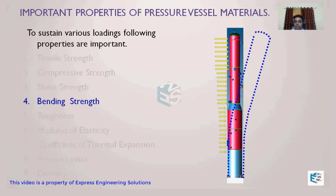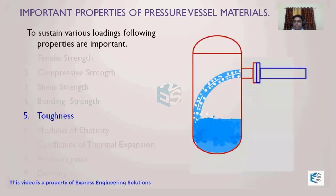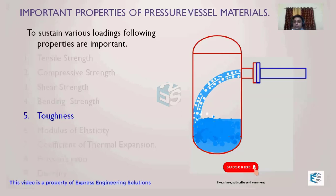The next very important property for pressure vessel material is toughness. Toughness is the ability of a material to withstand shock. When fluid flow impacts the vessel walls, the material should not fail from that impact. A brittle material would suddenly fail under such conditions. Therefore, toughness — the ability to absorb shock — is also a critical material property.